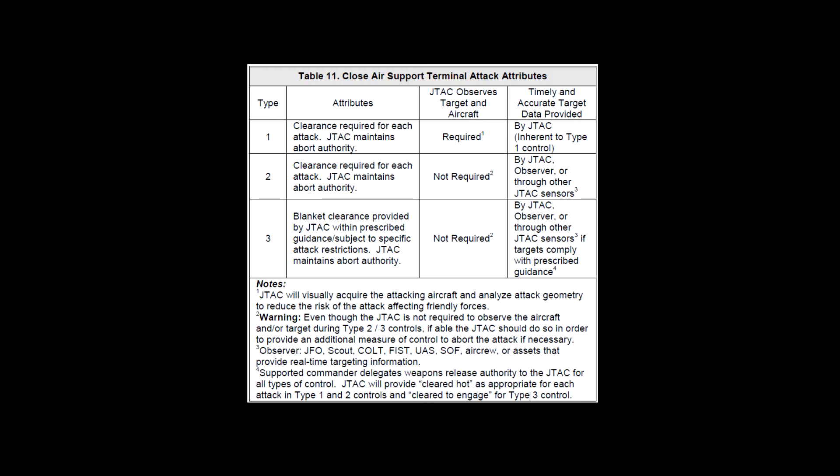Type 2 control is used when the JTAC requires control of individual attacks but assesses that either visual acquisition of the attacking aircraft or target at weapons release is not possible, or when the attacking aircraft is not in a position to acquire the mark or target prior to weapons release.